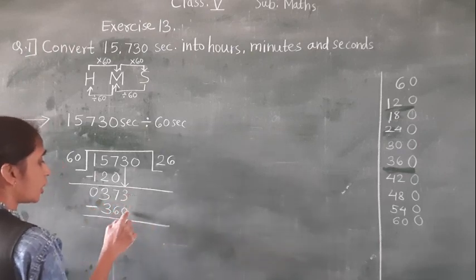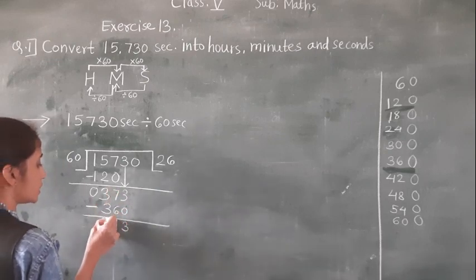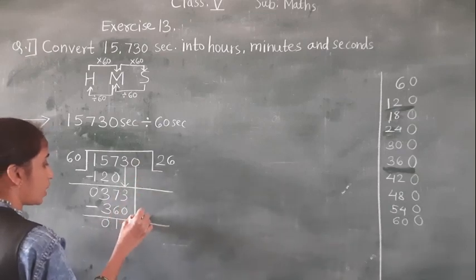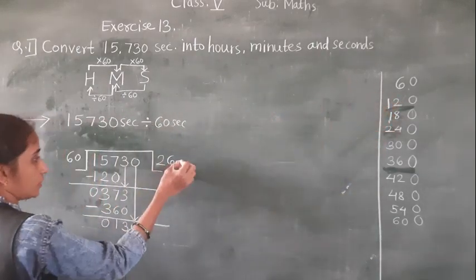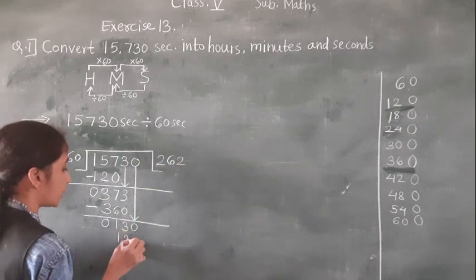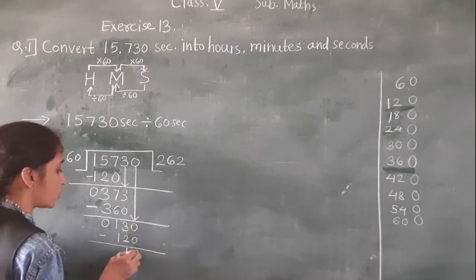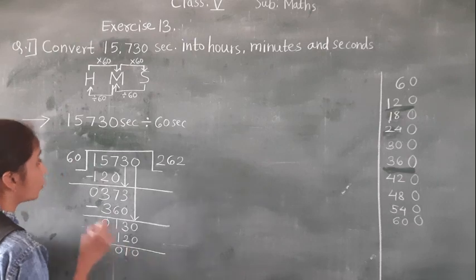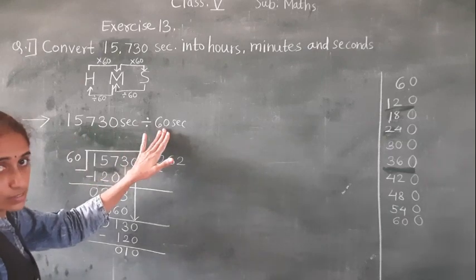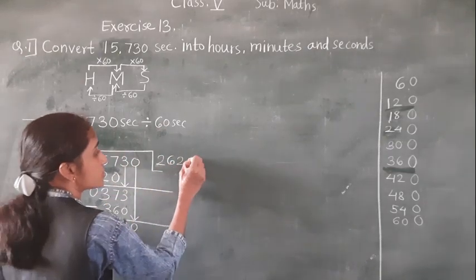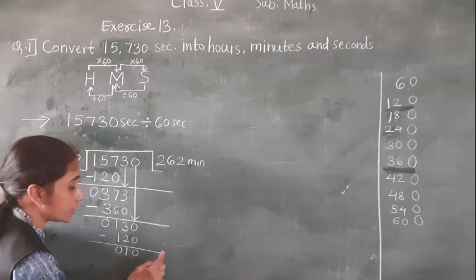Subtract: 3 minus 0 is 3, 7 minus 6 is 1, 3 minus 3 is 0. Bring down 0. These are the seconds — we divided by 60 seconds. So what we got? The quotient gives us minutes. The remainder part is seconds.